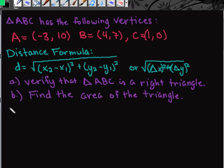Let's first start by finding each of the sides. We would find the distance from A to B, A to C, and B to C. So let's start with AB first.